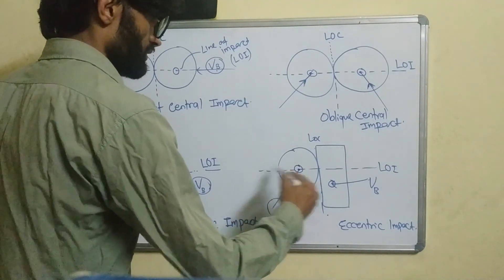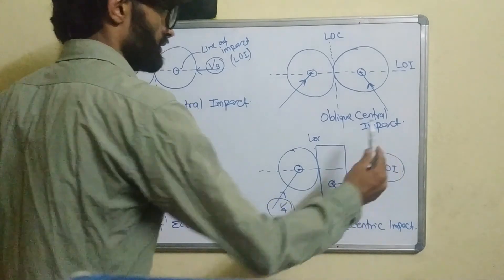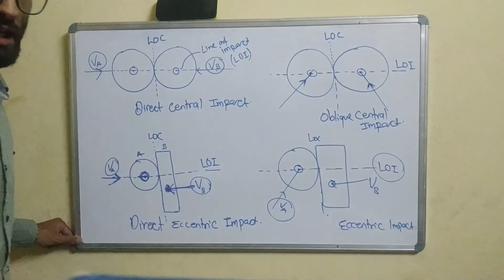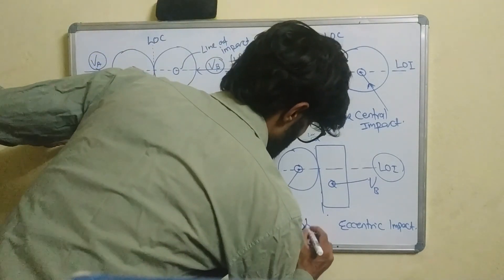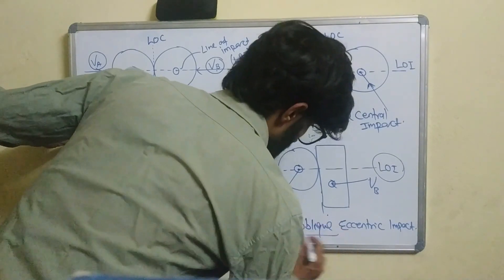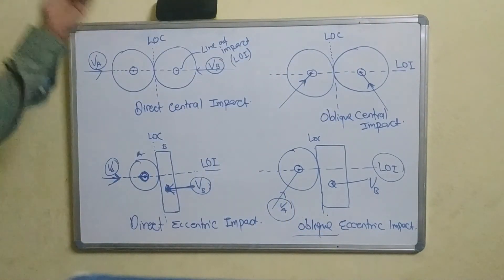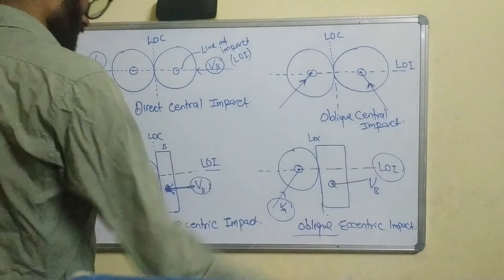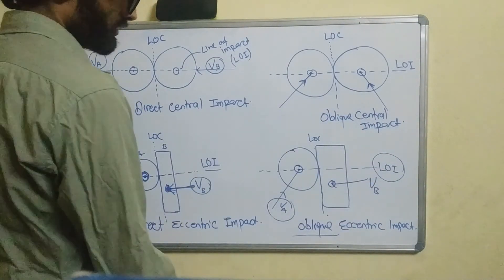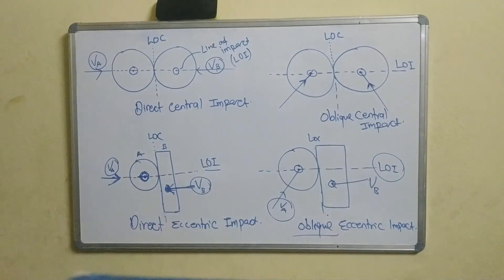Then it's on the line of impact. If you have a line of impact, this is Oblique Eccentric Impact. There are four types of impact: Direct Central Impact, Oblique Central Impact, Direct Eccentric Impact, and Oblique Eccentric Impact. This is the diagram summarizing the four types of impact.